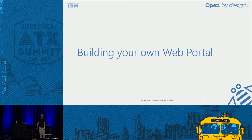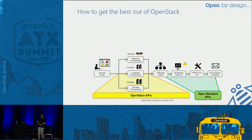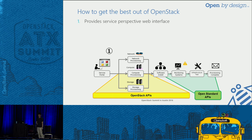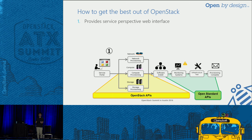How do we do that? I finally go back to my title — Building Your Own Web Portals. In the last chapter, I talked about the good things about OpenStack and the considerations. Now, how do we overcome that? There are three points. The first point is: let's provide a service-perspective web interface — this is the web portal I'm talking about, and we really have to care that this is not Horizon. We are not going to show everything OpenStack can do to users; we're going to show only the things that people really care about.